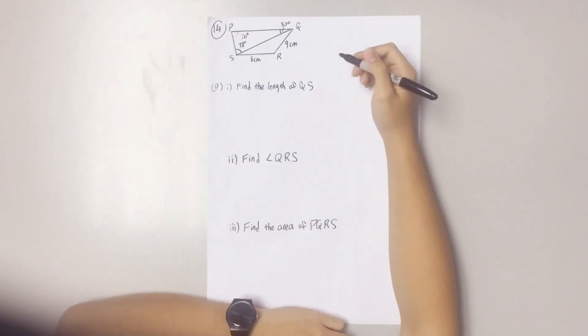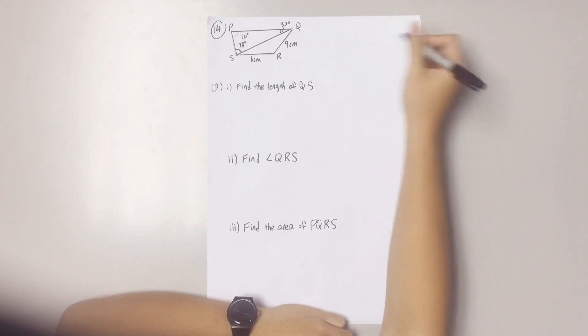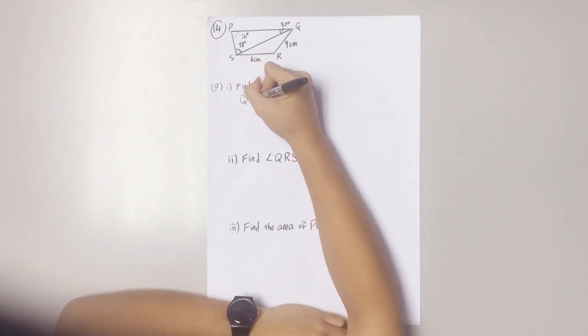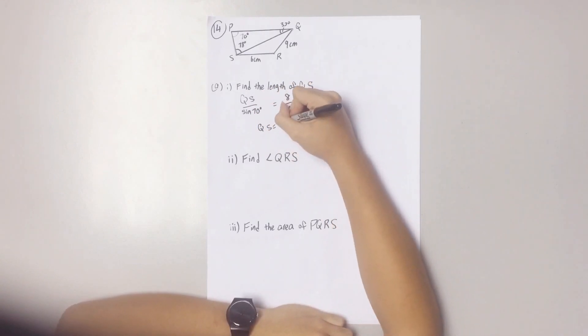Let's now start trying to find the length of QS. To find the length, you must use the sine rule. The length of QS is 14.19 cm.